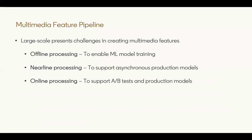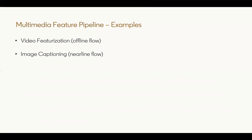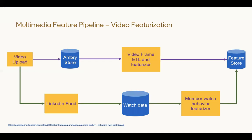We'll show examples of two types of pipelines: an offline flow for featurizing videos and a nearline flow to generate text image captions. For video featurization, we start when a member uploads a new video. The video is stored in the Ambry storage system, open-sourced by LinkedIn and optimized to store and serve media content. On a daily basis, a one-frame-per-second video framing ETL process writes to HDFS, enabling Spark or TensorFlow flows to operate on the data.